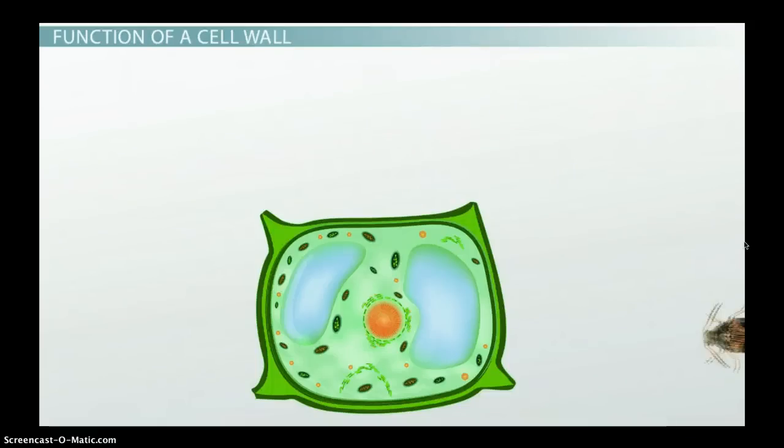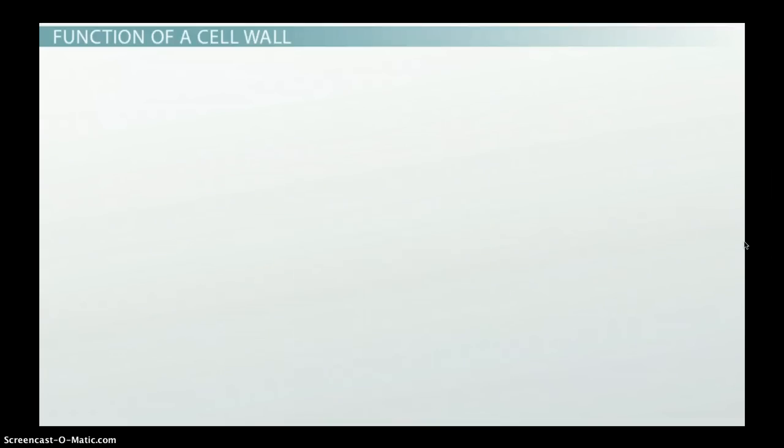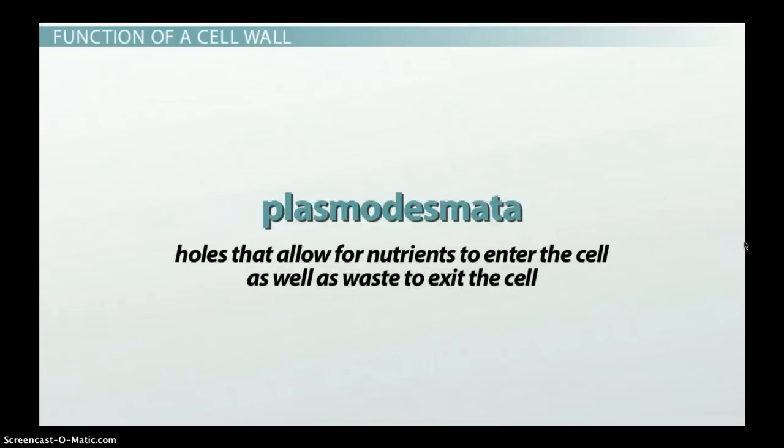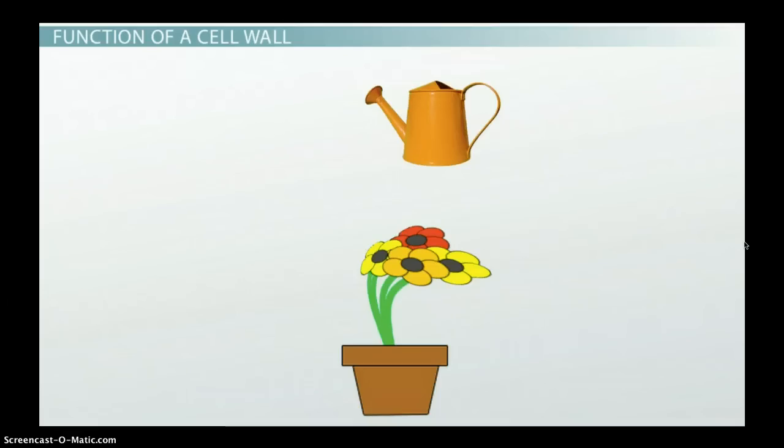The cell wall protects the plant and cells from the many insects and pathogens that could harm the plant, but the cell wall still has its vulnerable areas. There are holes all over the cell wall called plasmodesmata. These are holes that allow for nutrients to enter the cell as well as waste to exit the cell. These small holes can cause the cell to lose water and this is when the plant will start to droop. But as soon as the plant can get a drink, it will bounce right back up to its proper shape.